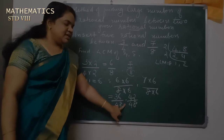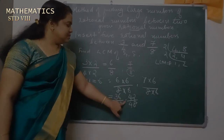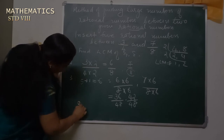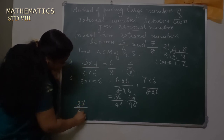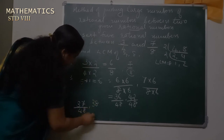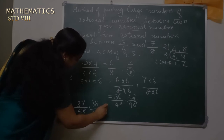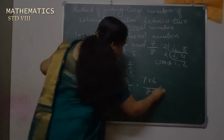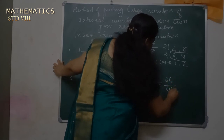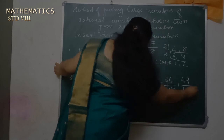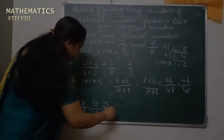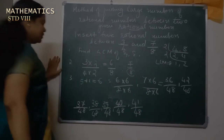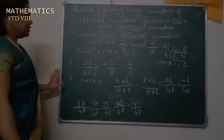The required rational numbers lie between 36 by 48 and 42 by 48. Since the denominators are the same, the five rational numbers in between are: 37 by 48, 38 by 48, 39 by 48, 40 by 48, and 41 by 48. These are the required five rational numbers between 3 by 4 and 7 by 8.